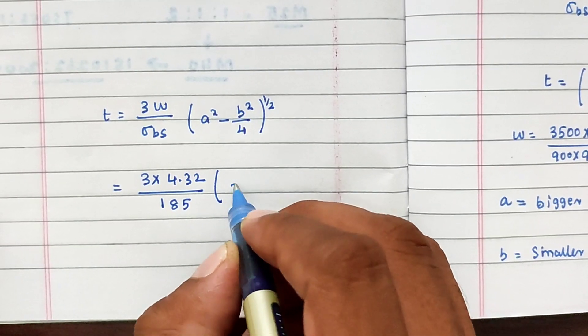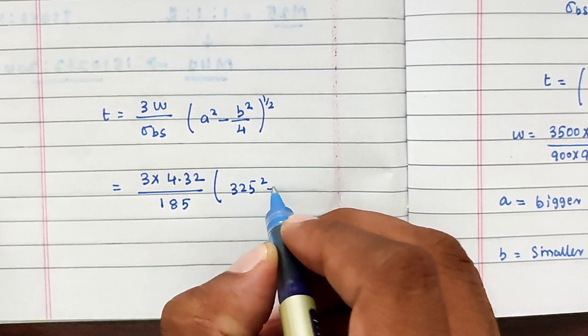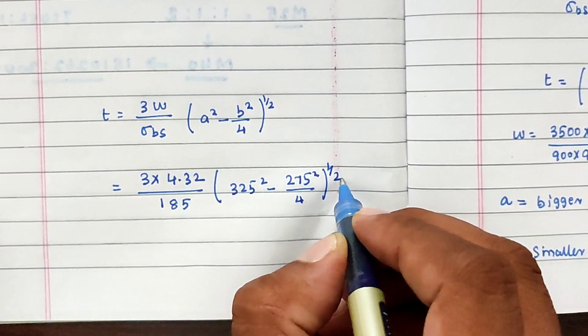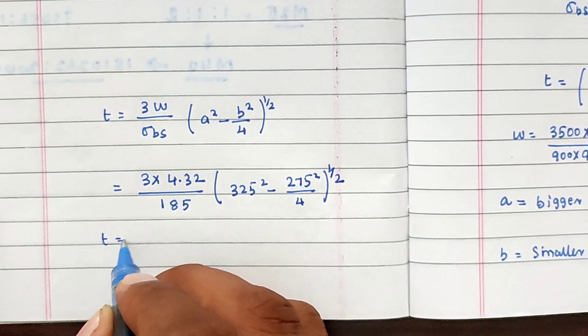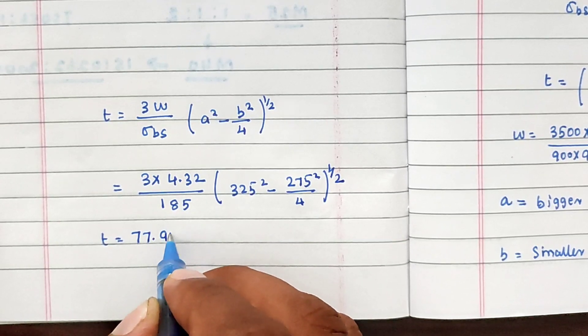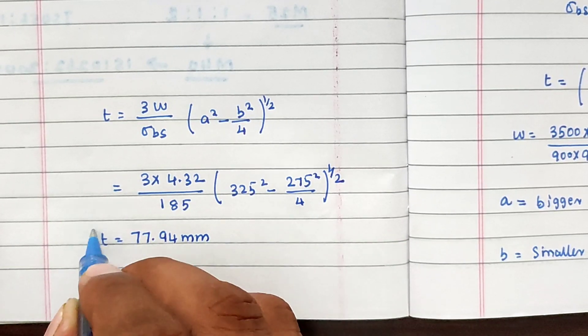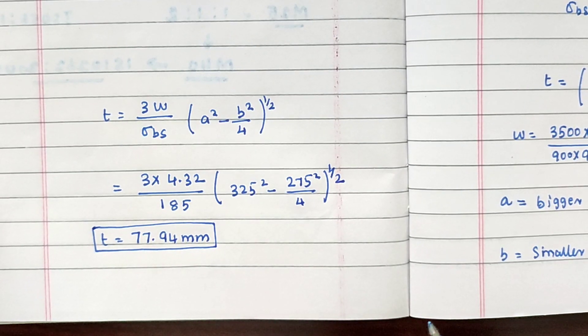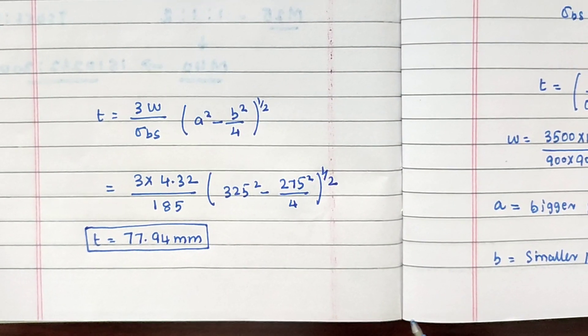Solving this, we got the value of 77.94 mm. So this is the thickness of the base plate. This is the method we can solve the problem. We will see again in the next video. Thank you.